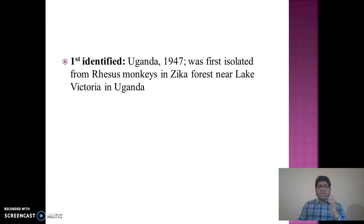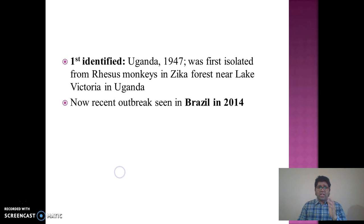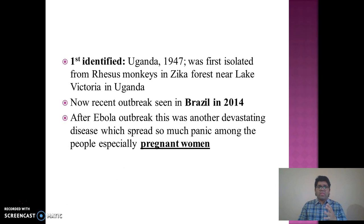Zika was first identified in Uganda in 1947, as it was isolated from a rhesus monkey in Zika forest near Lake Victoria in Uganda. A recent outbreak was seen in Brazil in 2014. After the Ebola outbreak, this was another devastating disease which spread panic among people, especially pregnant women.